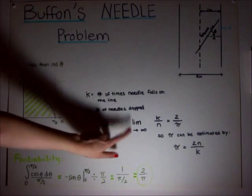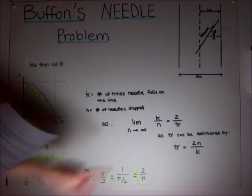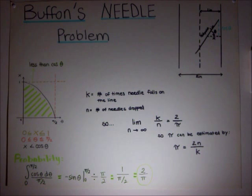We do so by taking the limit as n approaches infinity, n standing for the times we threw a needle on the floor and k stands for how many of those needles landed on a crack. So pi can be estimated by pi equals 2n over k.